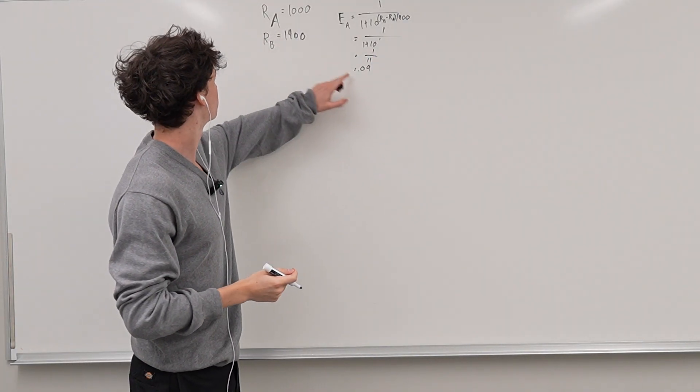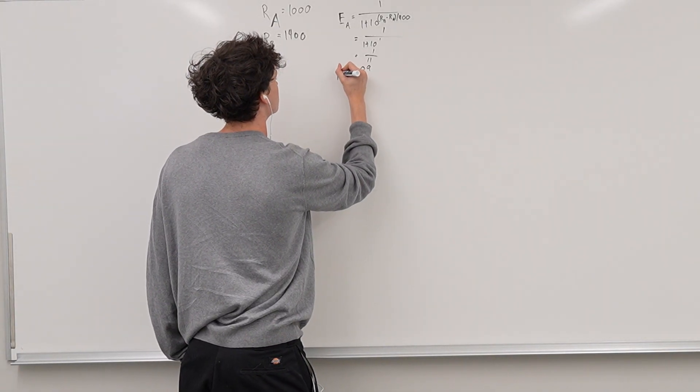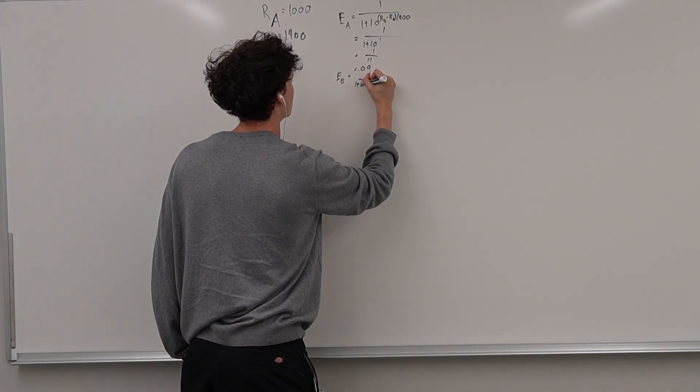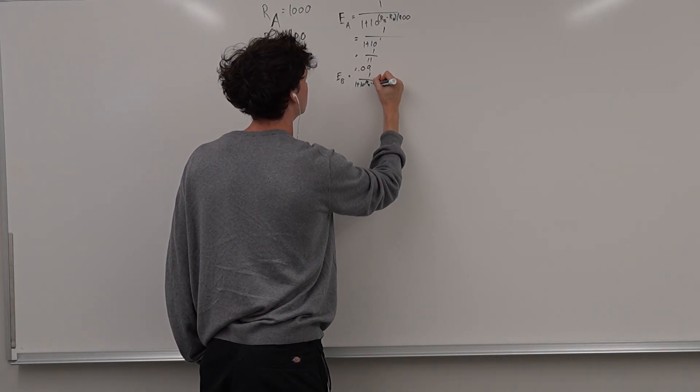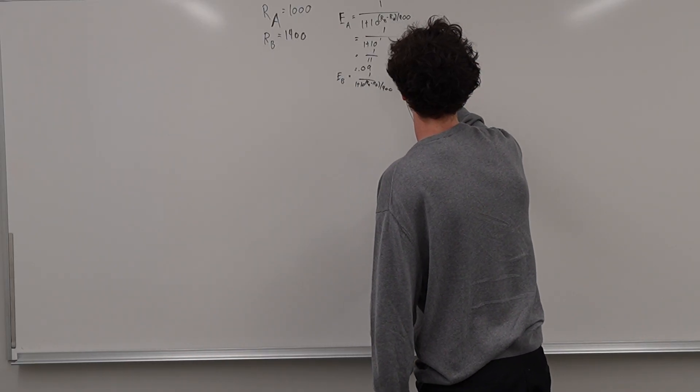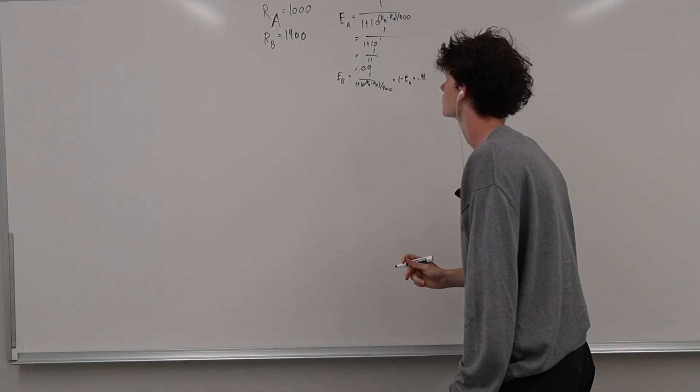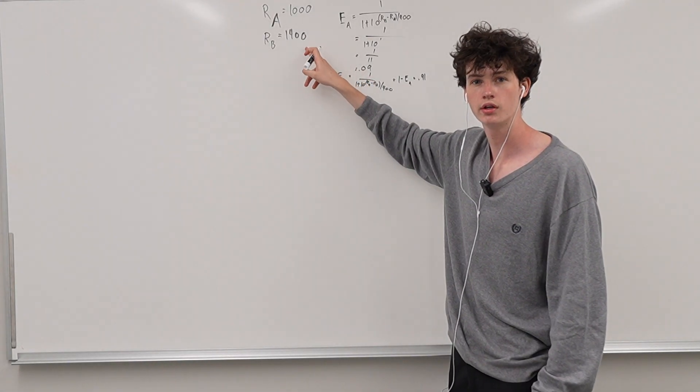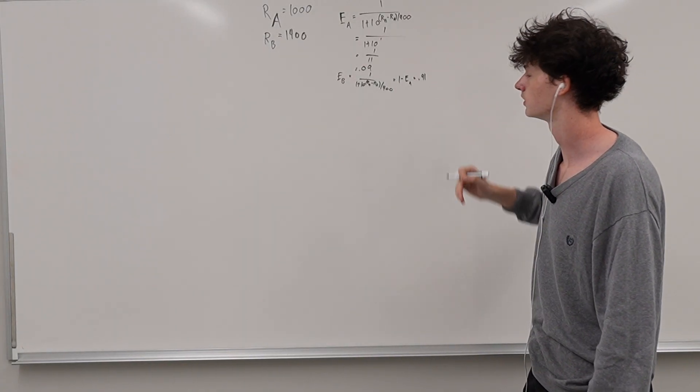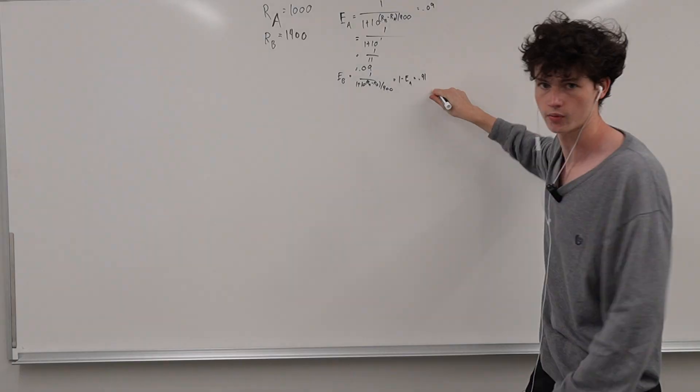So the probability that person A actually wins this game is 9%. And we could do the same formulation for player B, which is 1 over 1 plus 10 to the power of RA minus RB over 400. But this is also just equal to 1 minus EA, which is going to be 91%. So 0.91. So person B is a 91% favorite to win this match. So here's our expected outcomes. What do we do with this? So EA is 0.09 and EB is 0.91.